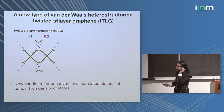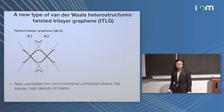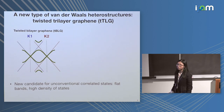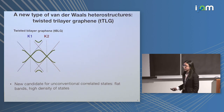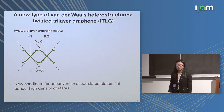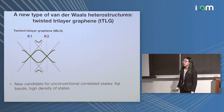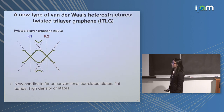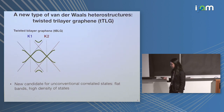Twisted trilayer graphene is a new type of Van der Waals heterostructure to realize interesting correlated states. To understand why, we can start with a simple physical picture that Professor McDonald introduced this morning: when you have a twist in a bilayer system, you are essentially putting two Dirac cones very close together. Because of the proximity of the two copies of the Dirac cone, the hybridization becomes really strong, and so the system tends to have flat bands as well as a pretty singular density of states.